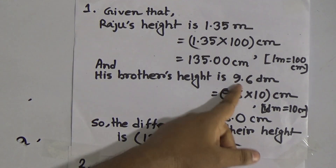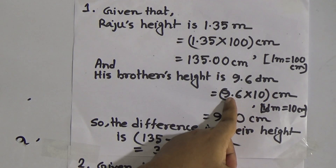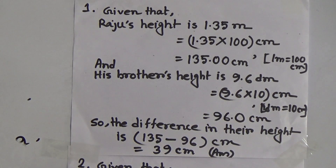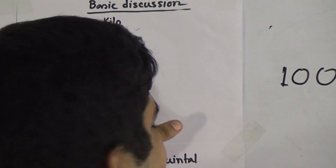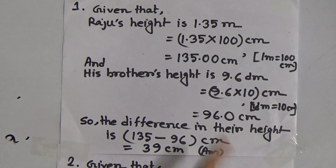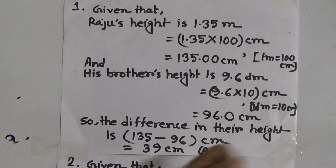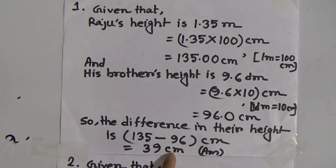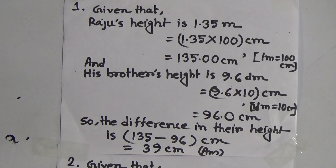Now converting the brother's height: 9.6 decimeters. One decimeter equals 10 centimeters, so we multiply 9.6 by 10, which gives 96 centimeters. Now the difference in their heights is 135 minus 96, which equals 39 centimeters. So the answer is 39 centimeters — that is the difference in their heights.